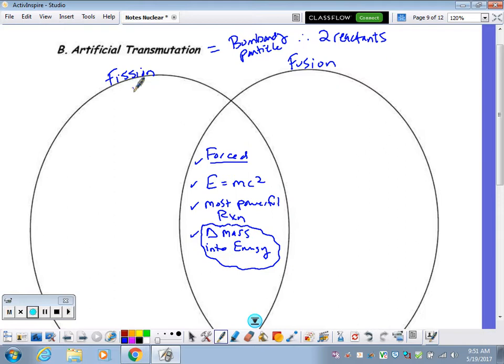Fission, specifically, this is the result of heavy or big nuclei breaking apart. It is going from big to small. Heavy big nuclei breaking apart. A big nucleus into a smaller nucleus.